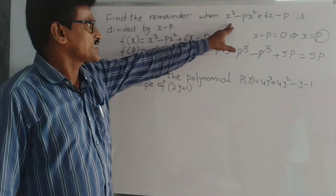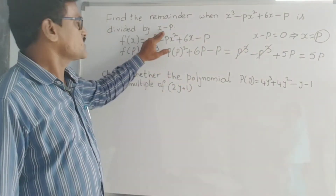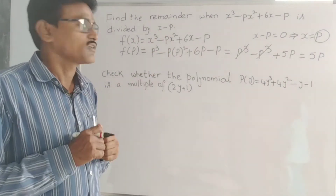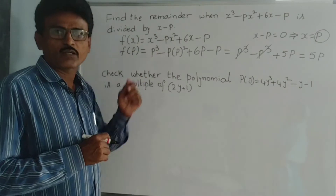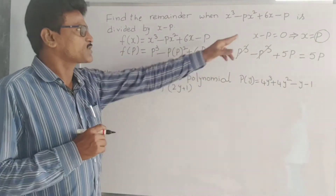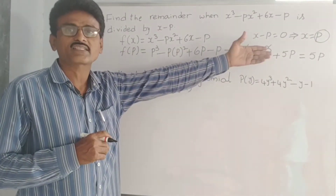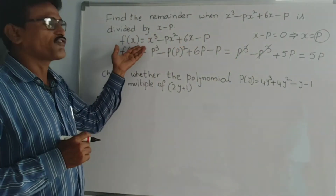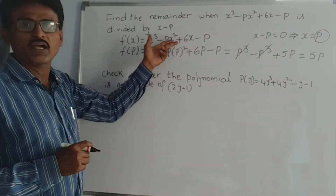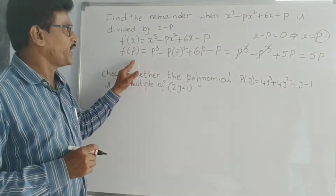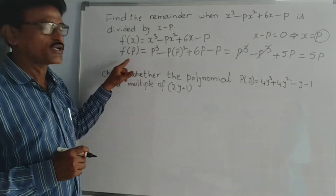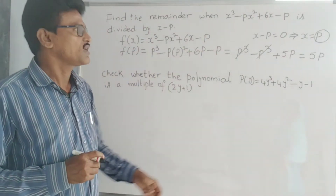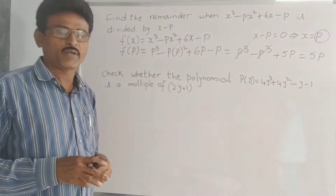Substitute P in place of x: P cubed minus P into P squared plus 6P minus P. P cubed minus P cubed cancels, leaving 6P minus P, which is 5P. So the remainder is 5P. Very simple remainder theorem. This is a cubic polynomial divided by linear polynomial x minus P, and we are getting remainder 5P.